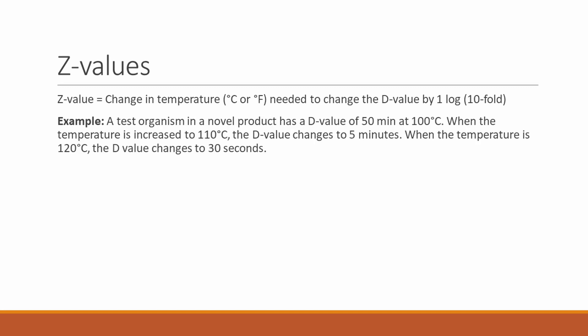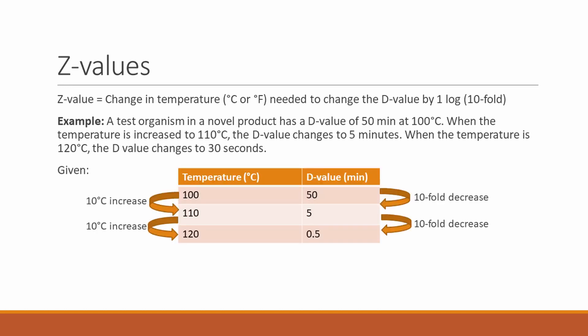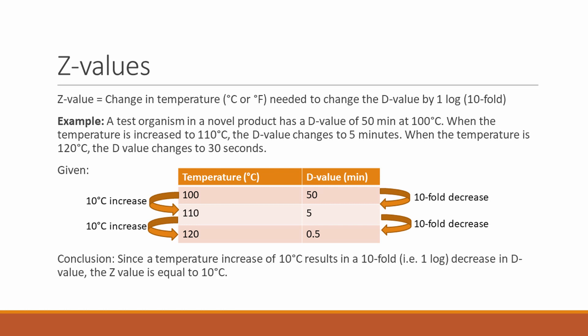Let's continue with our previous example, where a test organism in a novel product has a D value of 50 minutes at 100 degrees Celsius. When the temperature is increased to 110 degrees Celsius, we find that the D value changes to 5 minutes. And when the temperature is further increased to 120 degrees Celsius, the D value changes to only 30 seconds. Putting these values into a table, we can easily see that every 10 degree increase in temperature leads to a tenfold decrease in the D value. Therefore, we can say that the Z value in this case is 10 degrees Celsius.